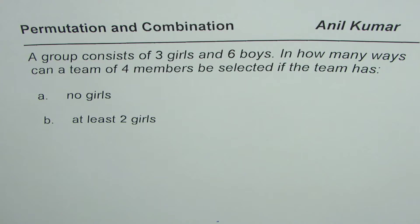The question here is: a group consists of three girls and six boys. In how many ways can a team of four members be selected if the team has, there are two cases, no girls, and the second one is at least two girls?